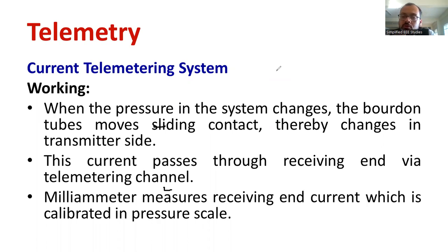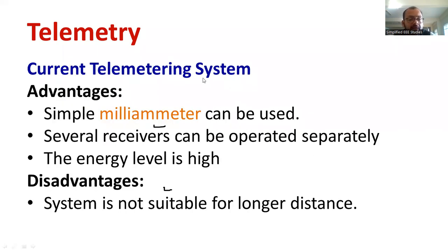Now the current will be transmitted through the channel. Then you will be getting the reading at the receiving side in terms of milliampere. It gives the reading. It is already calibrated in terms of pressure, kilo newton per meter square. So we use copper wire only. This is a simple working of current telemetry system.